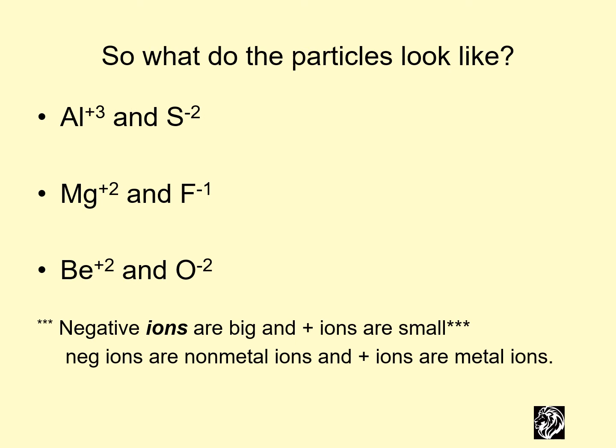So what do the particles look like? Well, this was Al2S3. So we had two aluminums and three sulfides. So Al+3, Al+3, S-2, S-2, S-2. It's hard to write, but this is what a particle might look like.